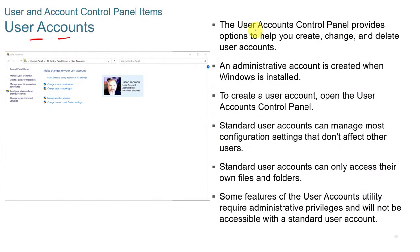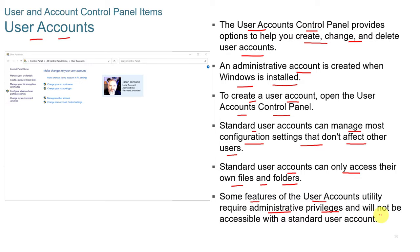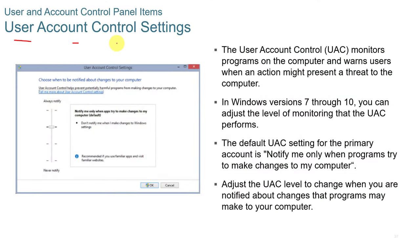User accounts are set up through the User Accounts control panel, which provides options to create, change, and delete user accounts. An administrative account is created when Windows is installed. Standard user accounts can manage most configuration settings that don't affect other users, and can only access their own files and folders. The User Account Control (UAC) monitors programs and warns users when an action might present a threat. In Windows 7 through 10, you can adjust the level of monitoring the UAC performs.